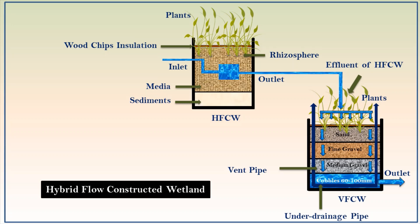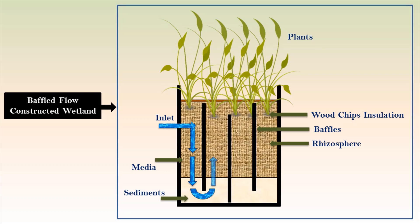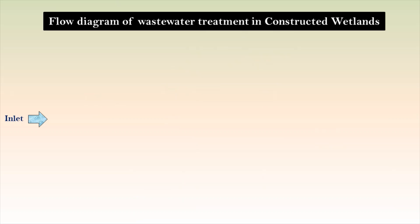The baffled subsurface flow constructed wetland consists of vertical baffles which guide the wastewater to flow up and down. Baffled flow constructed wetlands reduce the area footprint and increase the efficiency of organic matter and nutrient removal.